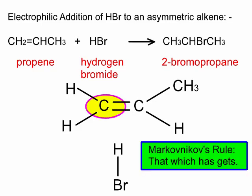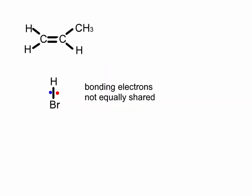Markovnikov's rule helps us to predict the major product: that which has, gets — referring to the fact that the carbon with the most H's directly attached, in this case the left-hand carbon, gets the incoming H of the HBr, and the bromine goes on the other.